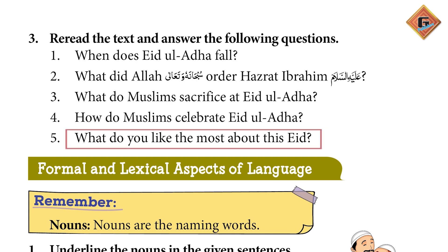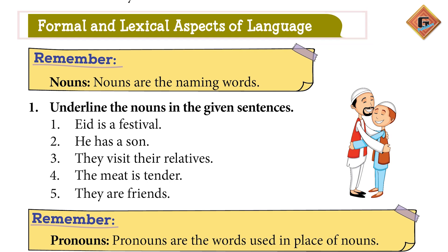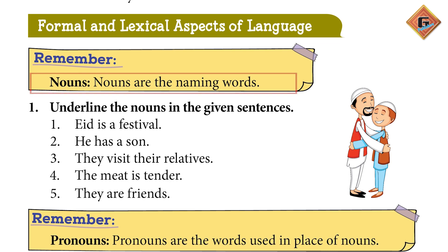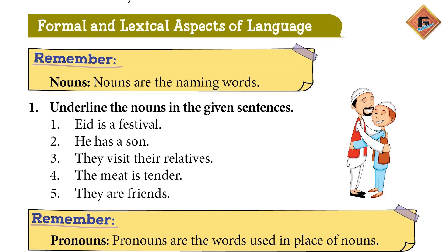What do you like the most about this Eid? I like to wear new clothes and feast on this Eid. Now our next topic is formal and lexical aspects of language. In this, first we have nouns. Nouns are the naming words — any thing, any name, place, person, or thing is a noun. Any entity, whether a living thing or a non-living thing like table, chair, cat, tree, boy, girl — these are all nouns. Question number one says: underline the nouns in the given sentences.